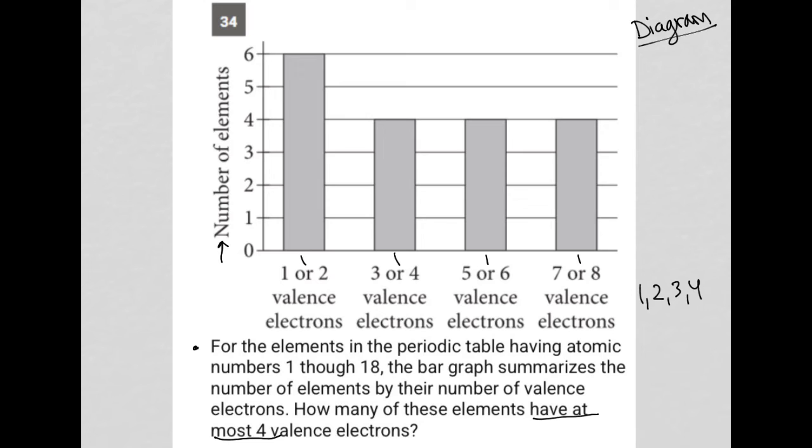That would include this first bar for all of the elements that have one or two valence electrons, so that's six. And that would also include this second bar for all of the elements that have three or four valence electrons, which is four.